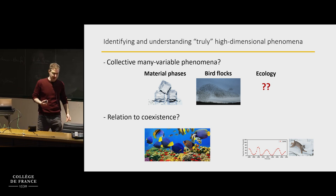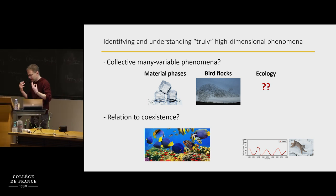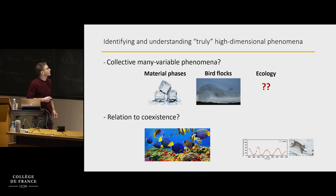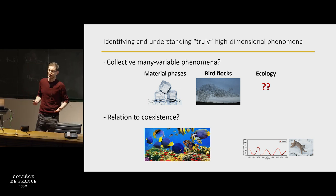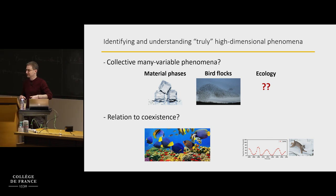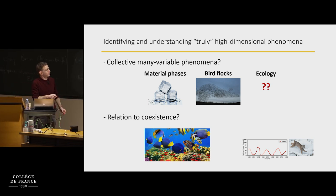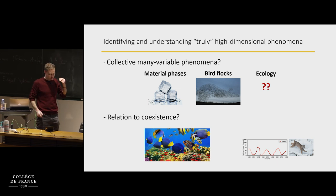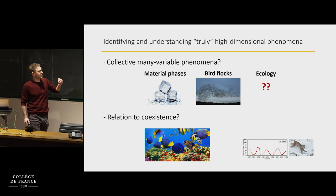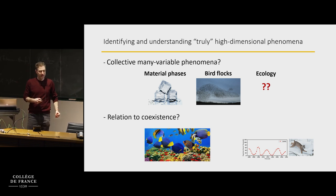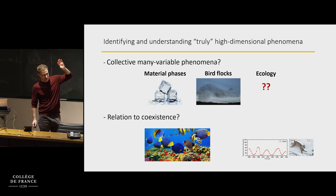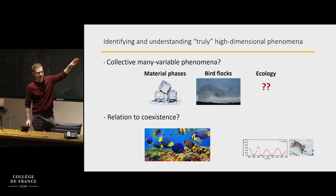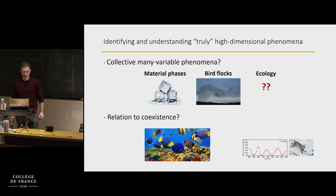In addition to our interest in collective phenomena, these fluctuations of population size are closely related to questions of coexistence. If all these species need to live together and the population sizes fluctuate this much, some species could go extinct just because of that. Both in terms of the kind of theory we need to write, and in terms of practical implications, coexistence and whether species can survive together is very central and important.